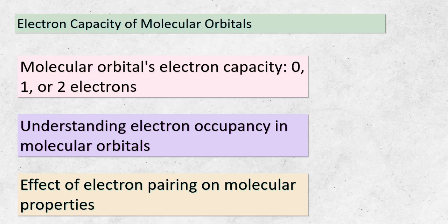We're now going to delve into a crucial aspect of molecular orbital theory: the electron capacity of these molecular orbitals. Each molecular orbital can accommodate either 0, 1, or 2 electrons. Understanding how these electrons occupy the molecular orbitals is key to comprehending the properties of molecules and materials. When an orbital has a single electron, it's unpaired and can lead to distinct chemical behavior. On the other hand, when an orbital houses two electrons with opposite spins, they form a stable pair. This pairing significantly influences molecular properties. The electron arrangement within molecular orbitals shapes the characteristics of the substances we encounter in our world.